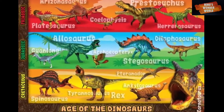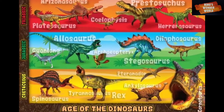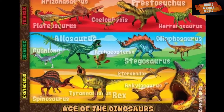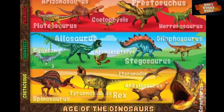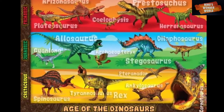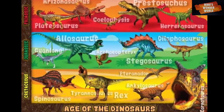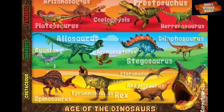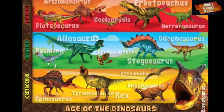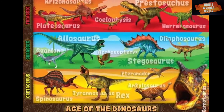Did you know that dinosaurs lived in three different ages? The age of the dinosaur, the Mesozoic Era, included three geologic time periods: the Triassic, Jurassic, and the Cretaceous periods. Different dinosaur species lived during different times of these three periods. The Cretaceous is the era in which most dinosaurs lived.